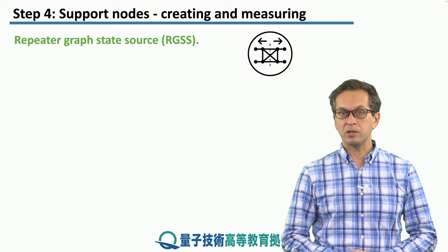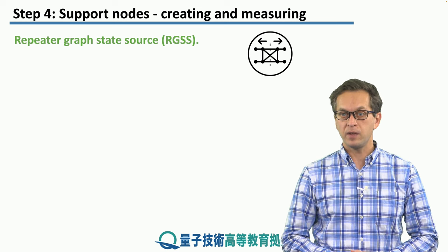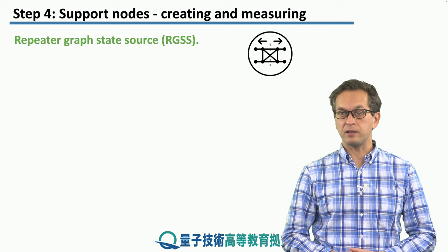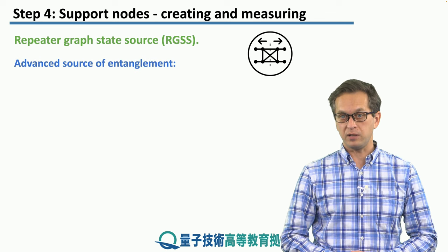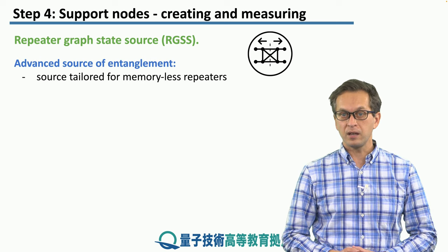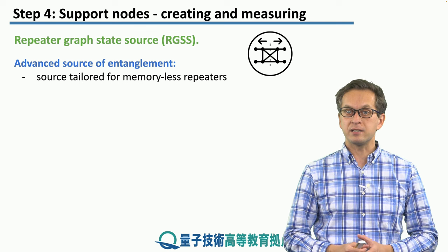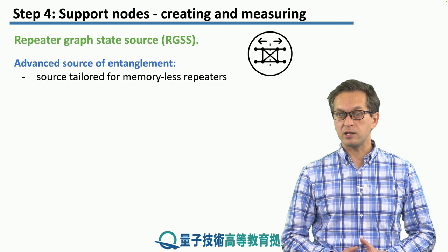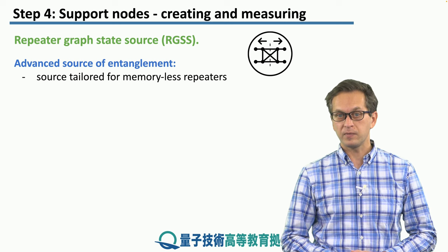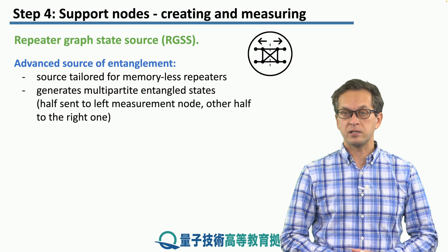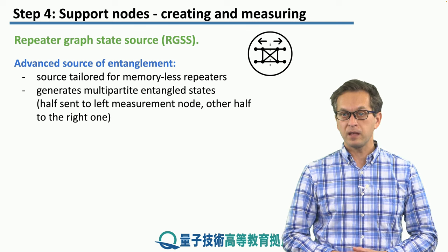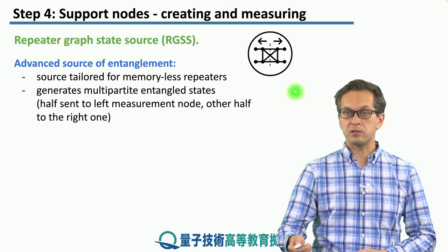The next support node is the Repeater Graph State Source, or RGSS. In spirit, this node is similar to an EPPS in that it produces entanglement, but it is a much more advanced source of entanglement. In particular, it is a source tailored for memoryless repeaters, based on the RGS link architecture we discussed before. This source generates multipartite entangled states of photons that look like graph states.